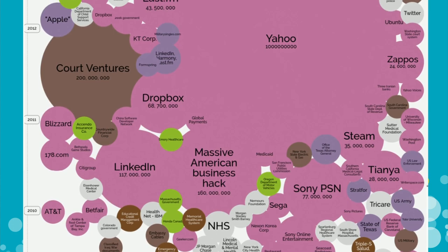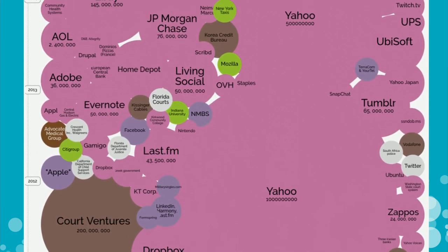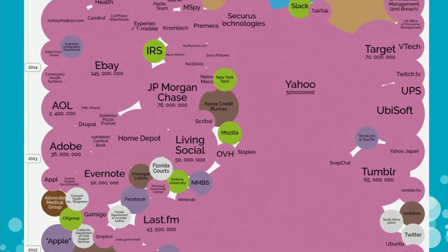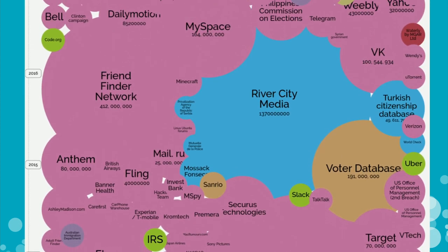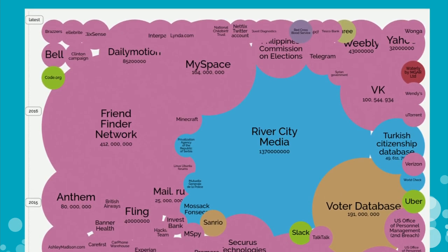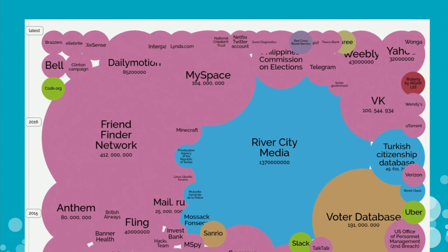Starting around 2010, 2011, 2012, there are so many breaches that you can barely tell the circles apart anymore. And these are not small companies — these are big companies, the big guys, with large IT budgets, a lot of security expertise, big security teams. There's Facebook, there are investment banks, there's Experian. So what happened to them can happen to any of us.